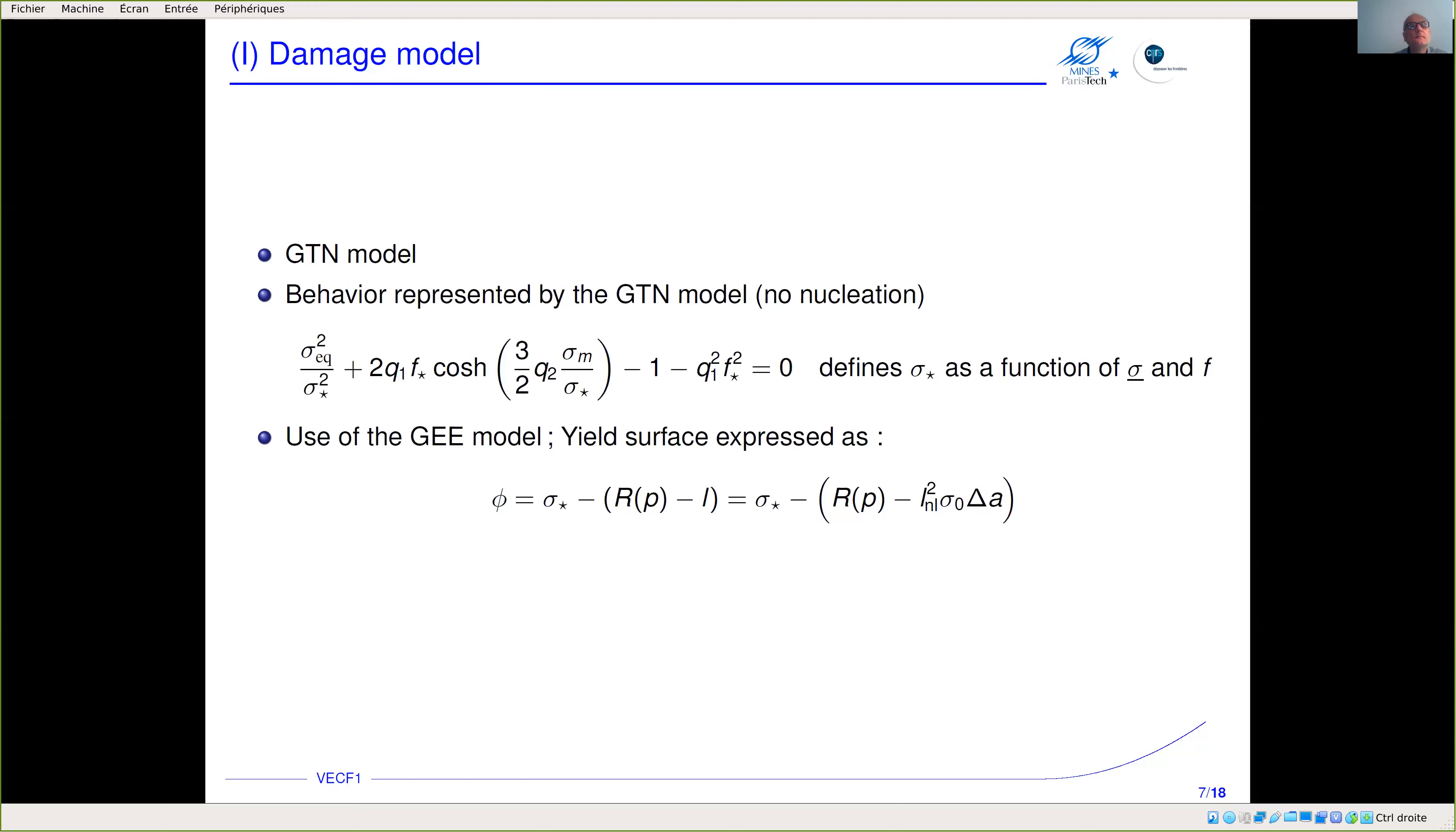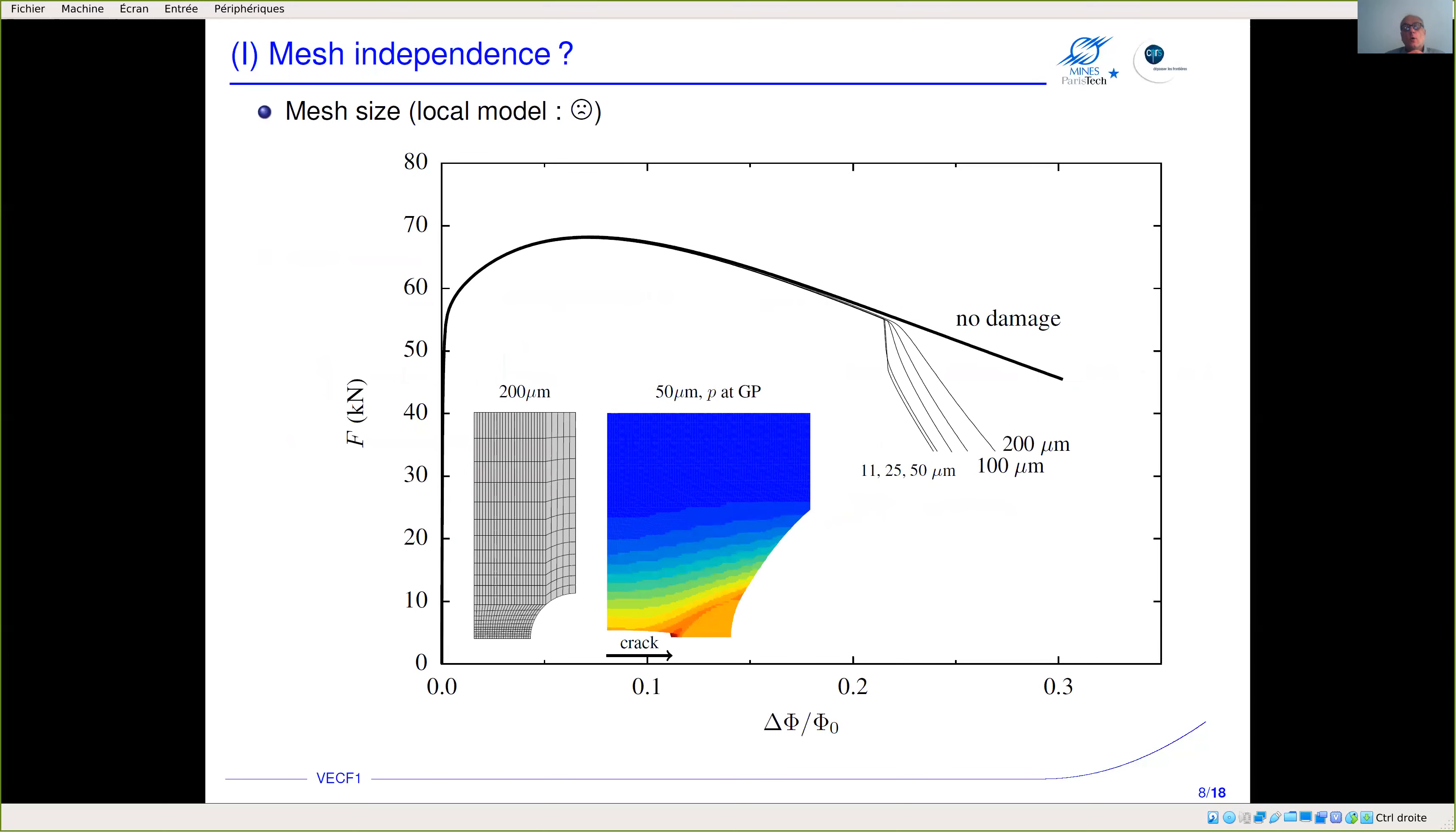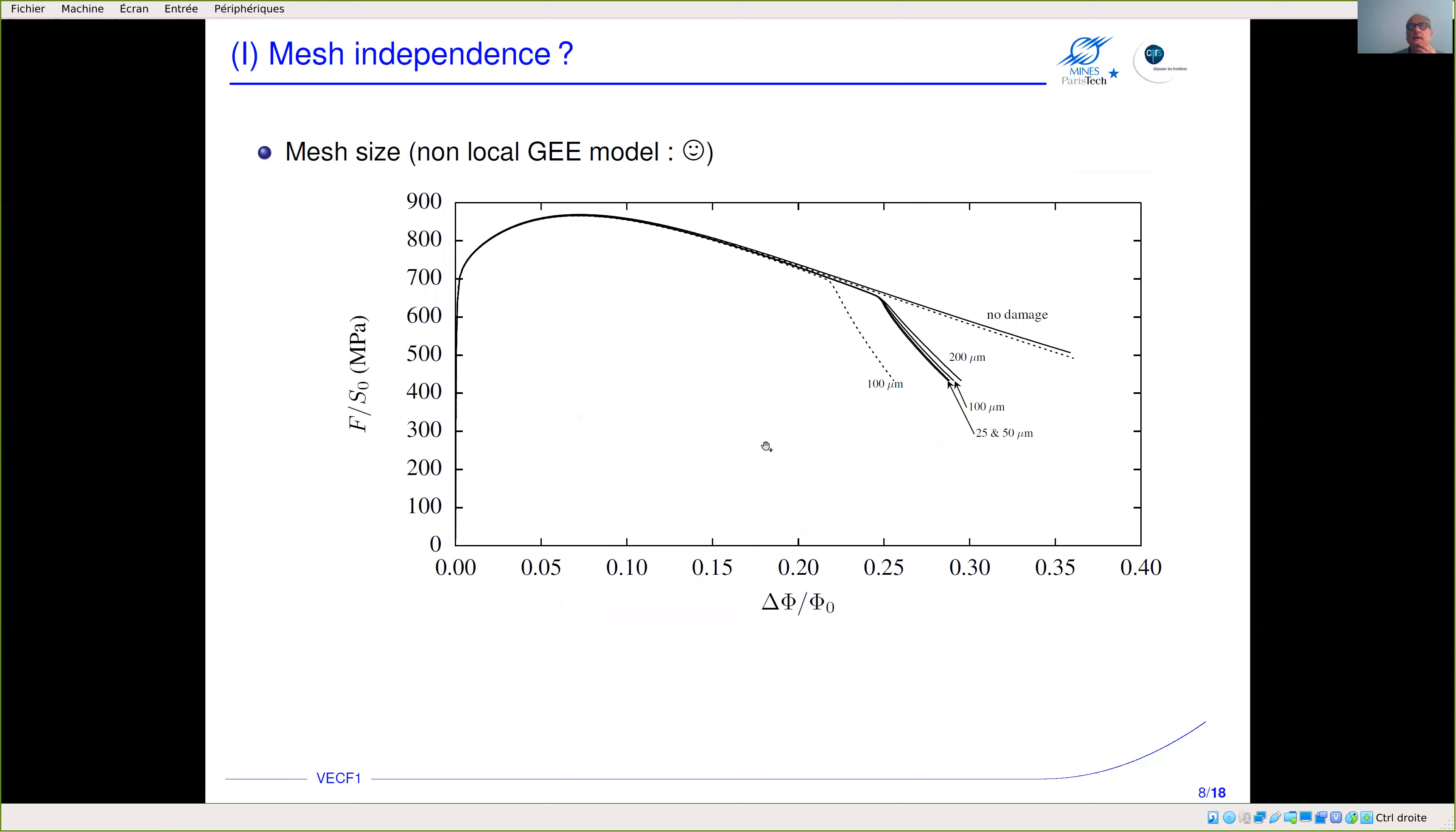Does this solve the mesh dependence? Here is a simulation of a notch bar with a local model. Thick line is without damage, thin lines are with different mesh sizes. We see there is no convergence, although you get a nice crack advance in the specimen.